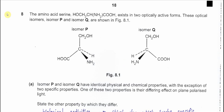Question 8. We have one amino acid serine, and it exists as two isomers: isomer P and isomer Q. These two isomers are optical isomers because they are mirror images of each other. They are mirror images that are non-superimposable because this is a chiral carbon.